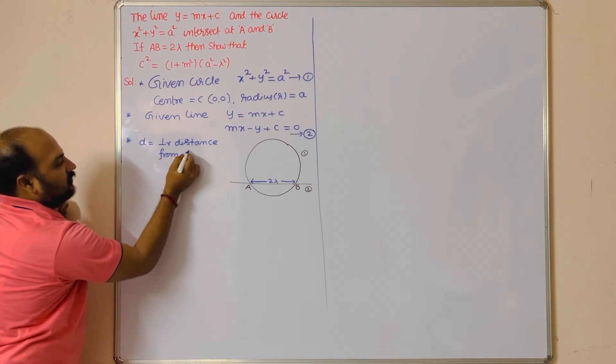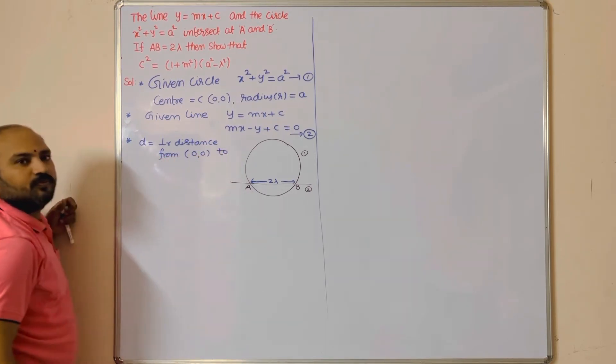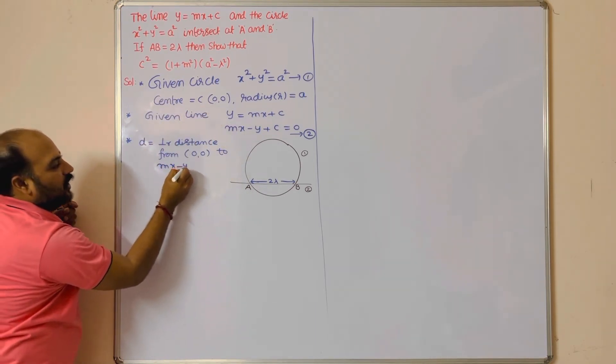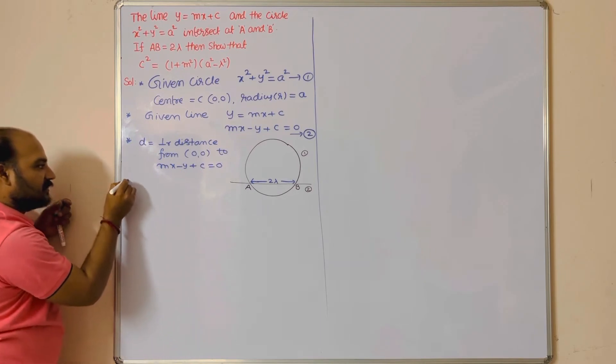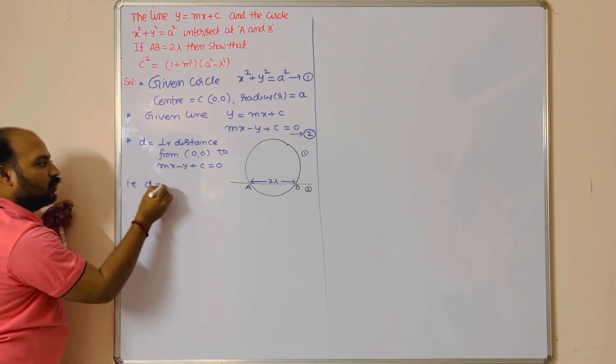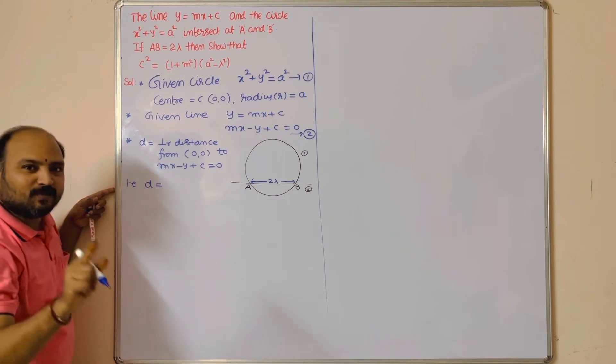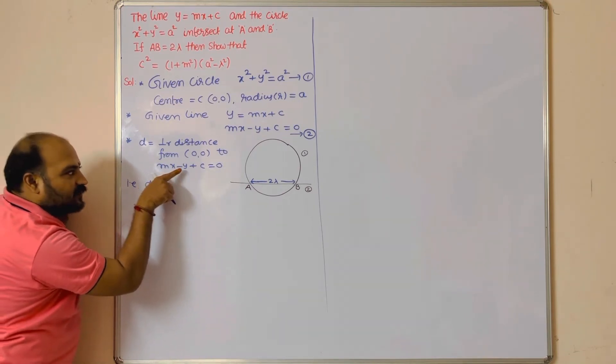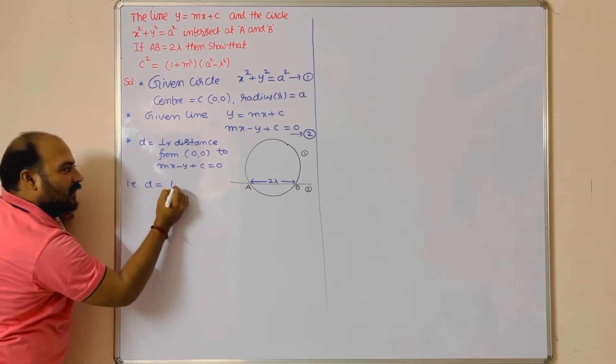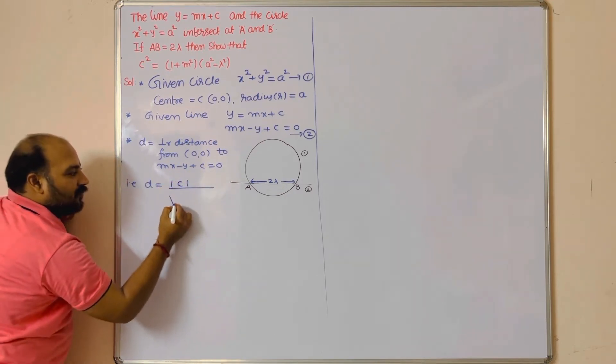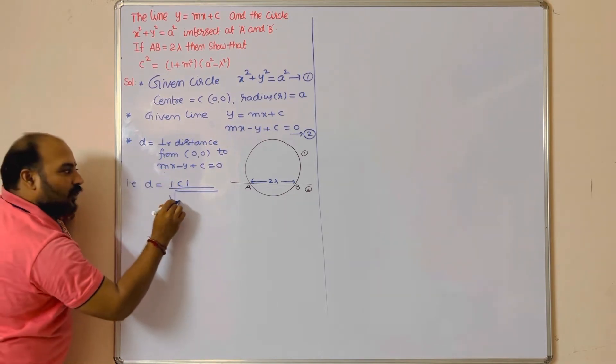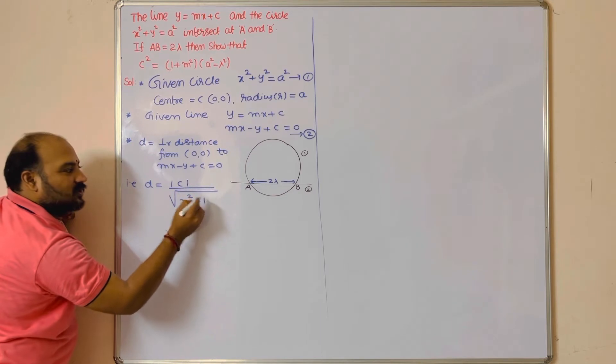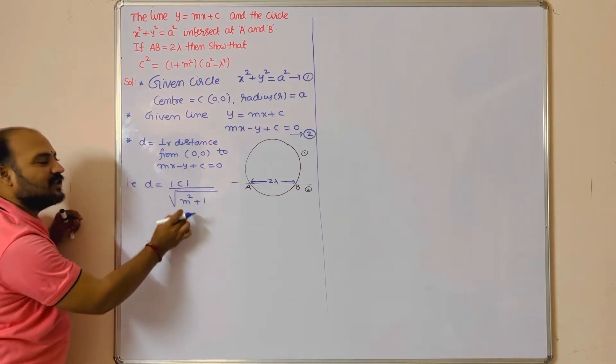We need to calculate r value—we got it. d value we need to take. So d = perpendicular distance from the center. d = |ax + by + c| divided by √(a² + b²). Here, a value is m, so a² means m², plus b value -1, so (-1)².